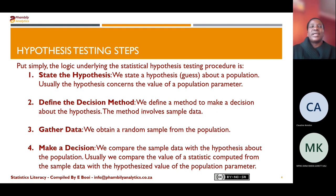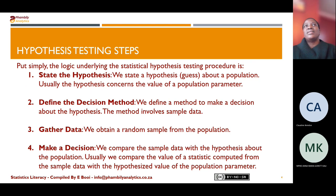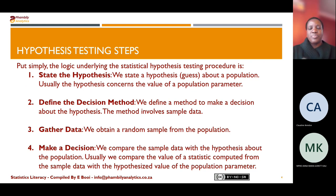There are steps you need to follow when doing hypothesis testing. The first step, based on your assumption, is to state the claim in terms of a null hypothesis and an alternative hypothesis. These will always use the population parameters. Because today we're dealing with the mean, we're always going to use mu to test the hypothesis.